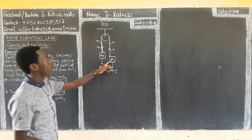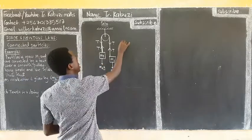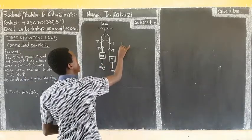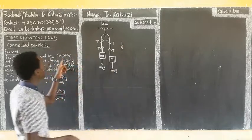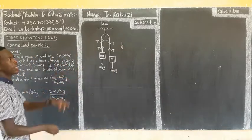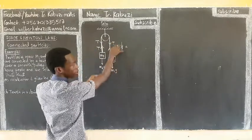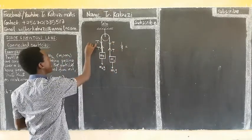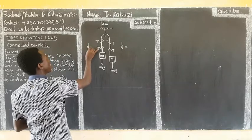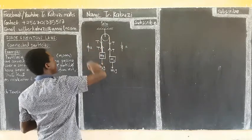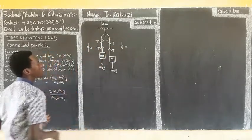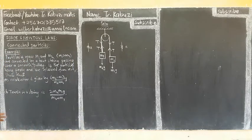Now, because this one is having a greater mass, of course the acceleration is going to be in that direction. Because this one is heavier than this. So it's going to pull in that order. So now, if this one is pulled, then this one is going to be moving upwards, like this. So it's going to accelerate, but in this direction.